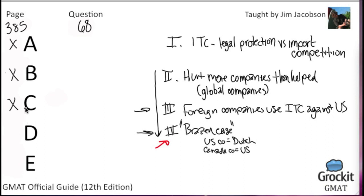D: those that help one unit within a parent company will not necessarily help other units in the company. Back in the second paragraph: the complexity of these relationships makes it unlikely that a system of import relief laws will meet the strategic needs of all the units under the same parent company. Choice D says those that help one unit within a parent company will not necessarily help other units — that sounds a lot like what's in the passage, but not exactly the same, and that's why this is an inference. Let's check E: laws that are applied to international companies will accomplish their intended result. Nothing in the passage really accomplishes its intended result, so it has to be D.